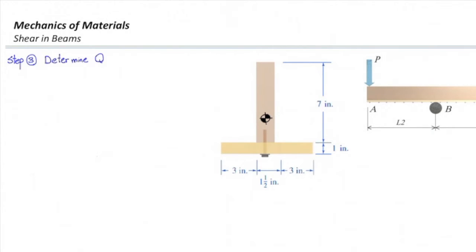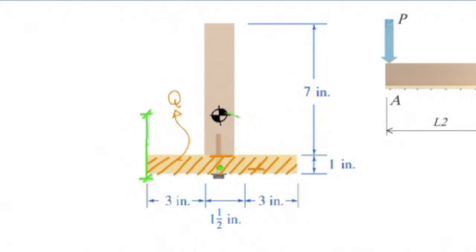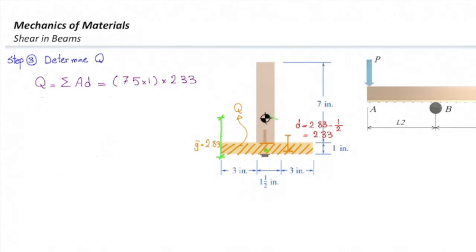Now we need to determine the value of Q. Q should be calculated either for the bottom part or for the top part. We consider the bottom part. Area of that bottom part would be 1 inch times 7.5 inches, and distance of the centroid of that subsection to the centroid of entire section would be 2.83 minus half of 1 inch, which is 2.33 inches. Plugging that into this equation gives me 17.48 inch cubed.